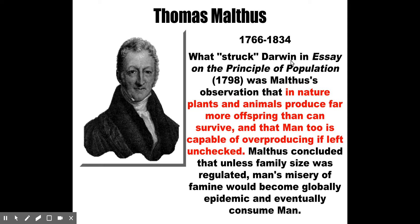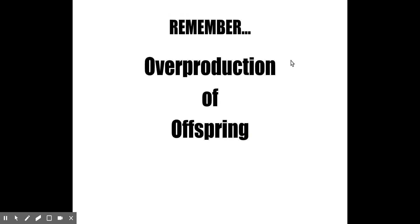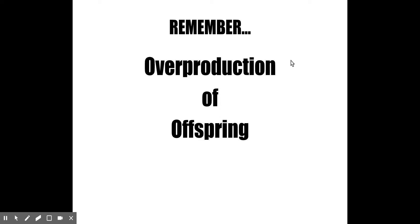Darwin went through the readings of Malthus, and Malthus's thoughts greatly influenced Darwin's explanation for how populations change over time. From Malthus, Darwin also concluded that there is overproduction of offspring — organisms tend to have more offspring than can possibly survive in a given habitat. As populations grow in size, limited natural resources force organisms to compete with each other. We can't have exponential growth of a population forever.